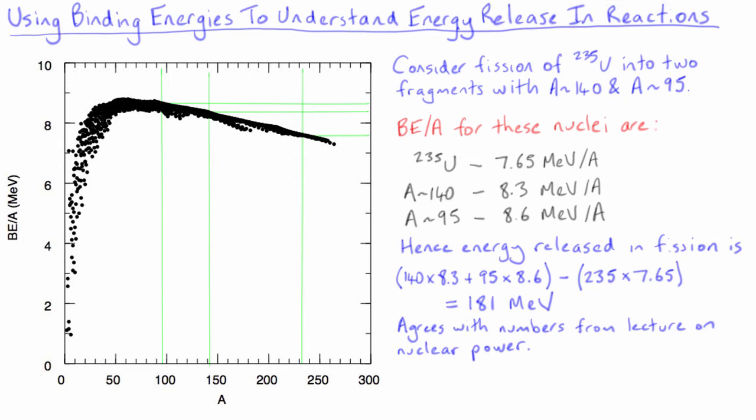The key point to be taken from this example is that the slope of the binding energy per nucleon curve means that the breakup of heavy nuclei into lighter fragments is often energy favoured. It should also be obvious from the behaviour of the binding energies of light nuclei that an equivalent energy release should be possible when light nuclei fuse together.